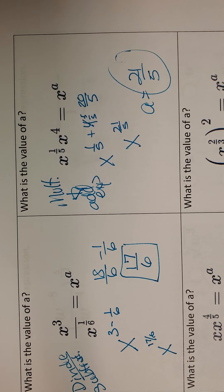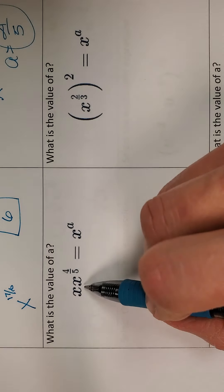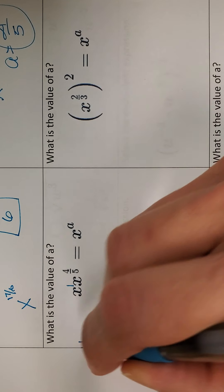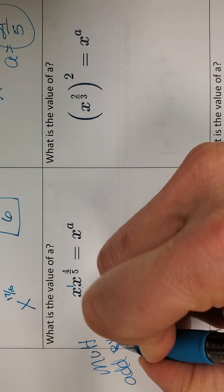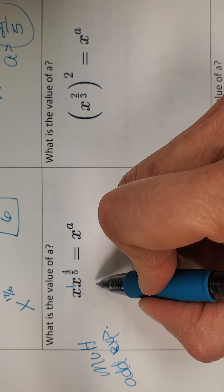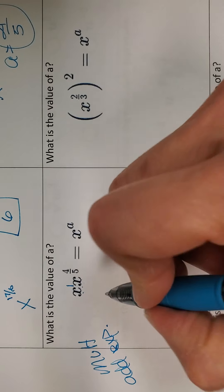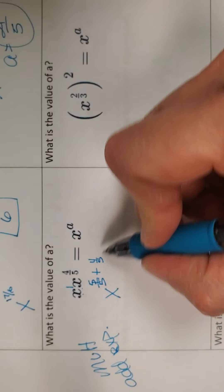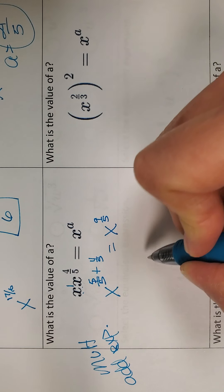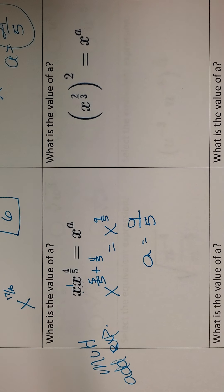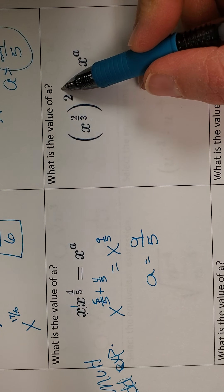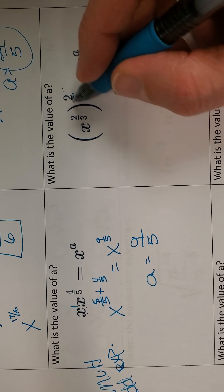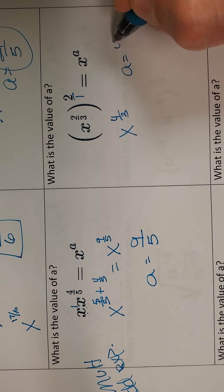This one can seem tricky because you don't see an exponent, but remember there's always a 1 if there's no exponent. Because we're multiplying x's, we add exponents. So I have x to the 1 plus 4 fifths. I change my 1 to 5 fifths, and adding gives me x to the 9 fifths — so a is 9 fifths. This next one is a power raised to a power, so we multiply exponents: top times top, bottom times bottom, giving x to the 4 thirds. So a is 4 thirds.